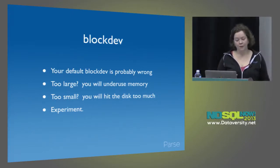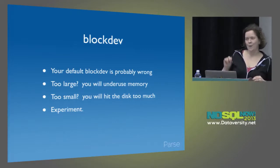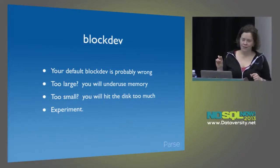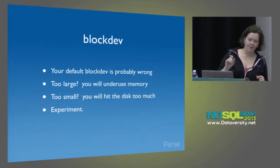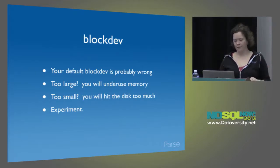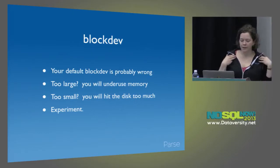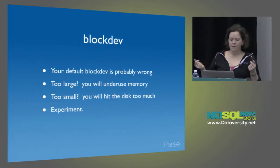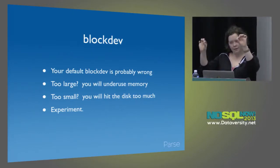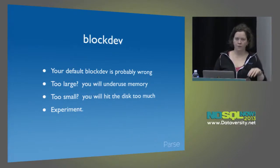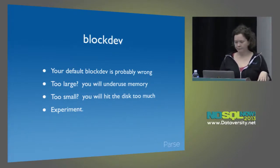Another awesome thing about 2.4: it will warn you every time you launch the Mongo shell if it thinks your block device settings are obviously wrong. And if you're using our Chef cookbook, there's a resource attribute you can set per cluster that will set your block device read-ahead correctly every time Mongo starts up.